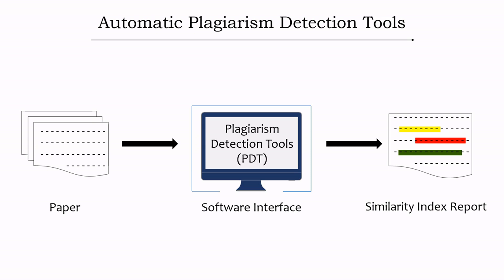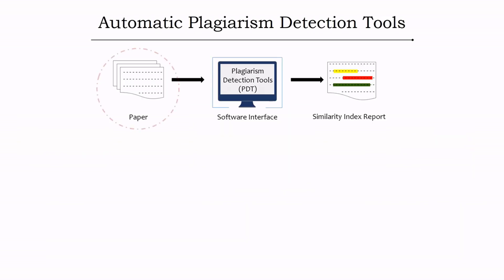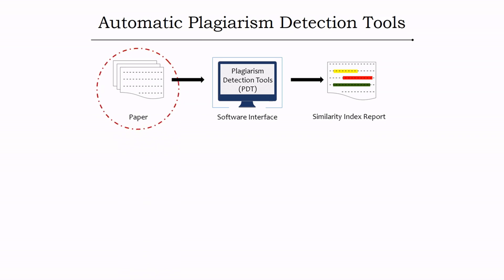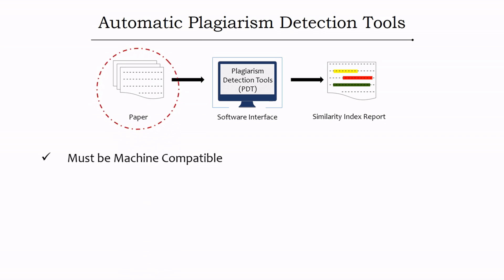The first step is uploading the paper that needs to be checked for plagiarism. The uploaded paper must fulfill certain criteria. The first criterion is that the paper must be machine-compatible — meaning each uploaded paper should be a soft copy, not a hard copy.